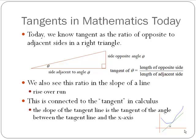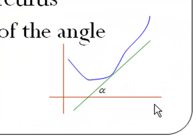We also see this ratio in the slope of a line — the rise over the run. If we look at this triangle, the side opposite theta is the rise, and the side adjacent to theta is the run of the hypotenuse. This is also connected to the tangent line in calculus, in that the slope of the tangent line of a function is the same as the tangent of the angle formed between the tangent line and the x-axis. The rise over the run of that line is the same as the tangent of that angle.